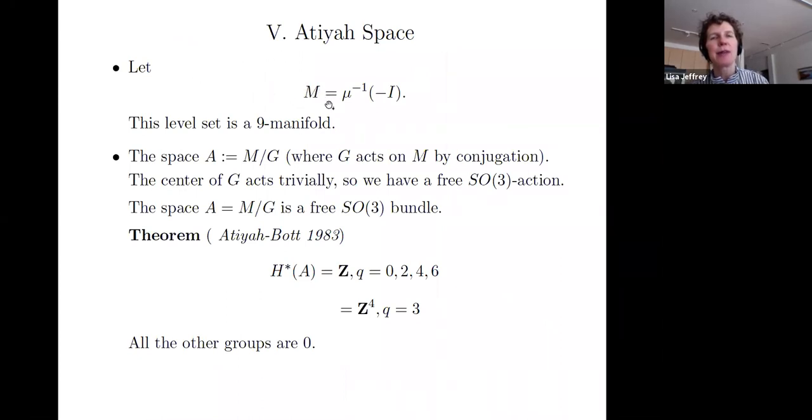So, M is the level set, define M as the level set of minus the identity element under the product of commutators. This is a nine manifold. The space A, which is the conjugacy classes of M, is what we will mostly be talking about from now on. The center acts trivially, so we have a free action of SO(3).